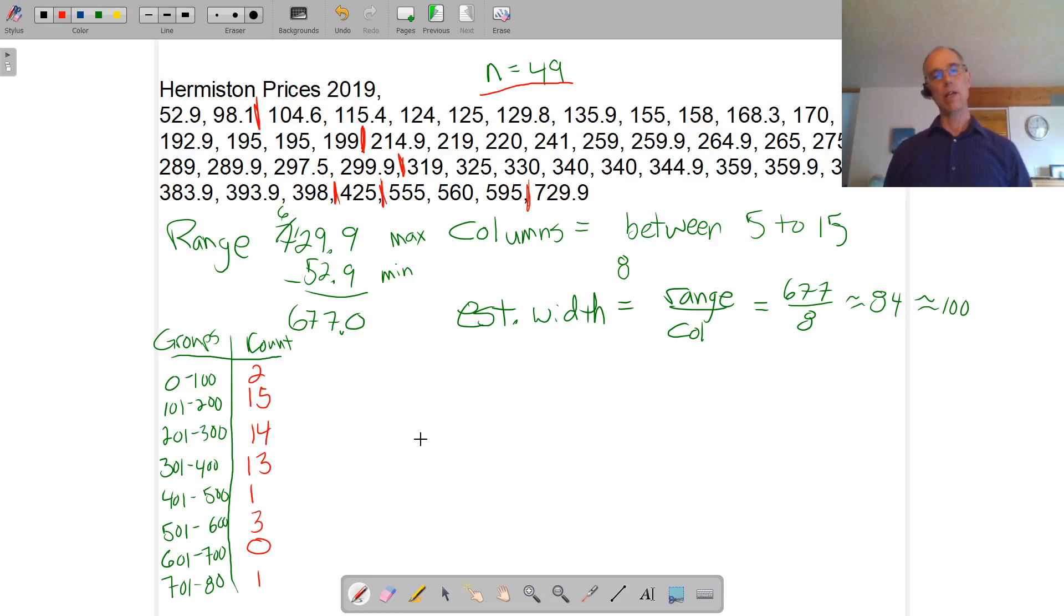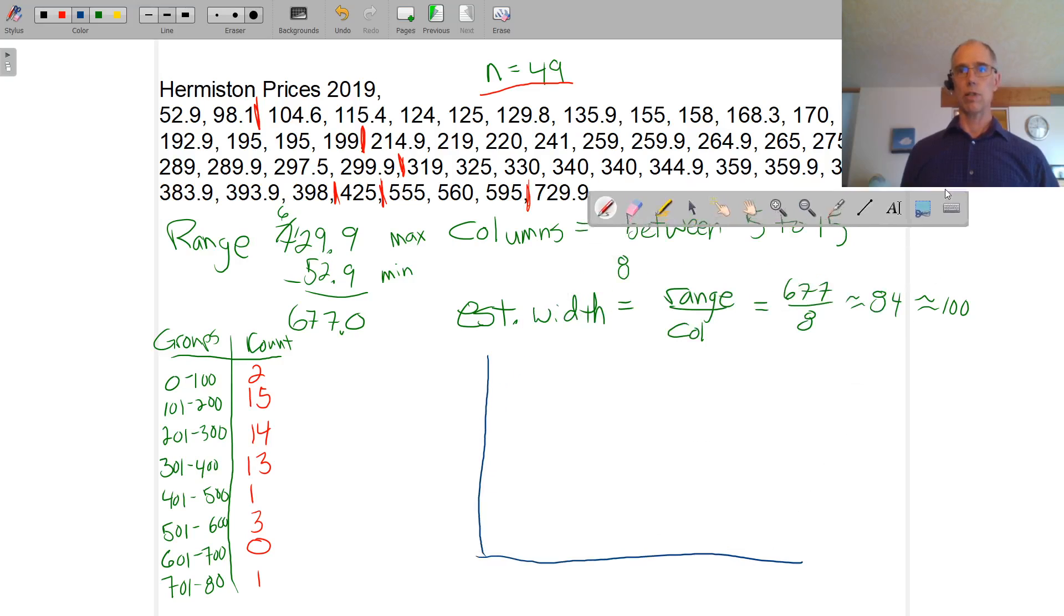And then what we do is we turn that into a bar chart. So drawing to the best of my artistic ability. Hopefully I'm better than the pie chart I did earlier. So then we mark off our axis to indicate what we need to do. So we need to go 100, 200, 300, 400, 500, 600, 700, 800, and scale it.